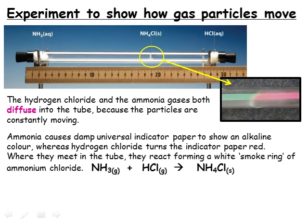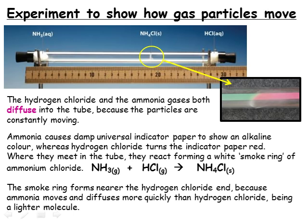The position of the smoke ring in the tube provides a valuable insight into how the particles are moving. We can measure how far from each end of the tube the smoke ring is, and this tells us about how fast the ammonia gas and hydrogen chloride gas particles are moving, on average. We find that the smoke ring forms nearer to the hydrogen chloride end of the tube, because the ammonia gas particles are lighter and therefore moving more quickly than the hydrogen chloride, so they manage to get further down the tube before they react.